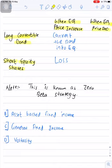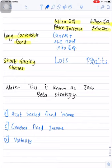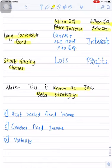When the price of equity shares decreases, the fund manager will make profits on the short position in equity shares. Since the price is falling, there is no need for conversion — the manager can retain the bond and earn interest from it. Important note: this strategy is known as a zero beta strategy, meaning it does not depend on the market. It tends to perform well regardless of market movement.